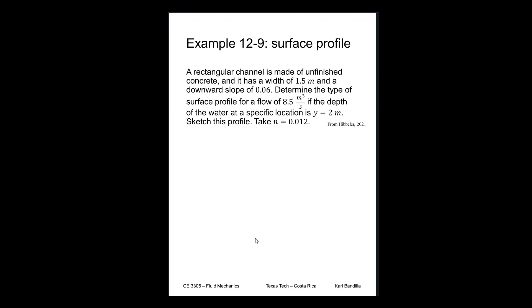This is example 12-9, and we're looking at a surface profile of a varying flow. So we have a rectangular channel made of unfinished concrete, has a width of 1.5 meters and a slope of 0.06. That's relatively steep.